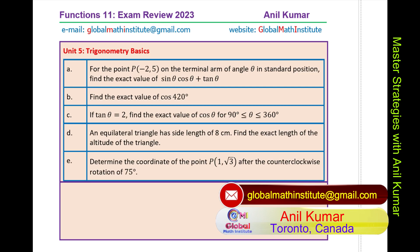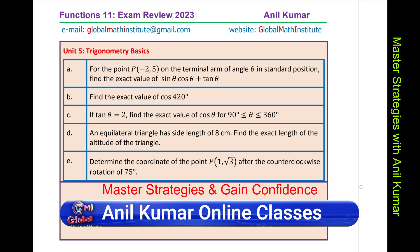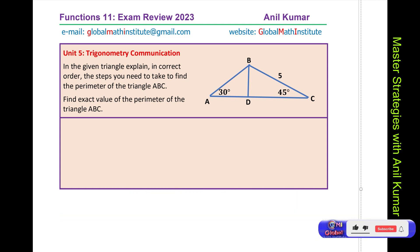Unit 5. Now, in this unit, we are taking trigonometric basic concepts, where trigonometric ratios are being considered. So, the 5 examples will give you a good idea for questions based on trigonometric ratios. And then, here is a communication question, very important communication question, where you might use special triangles to find the perimeter of the given triangle. Have a good look at it.